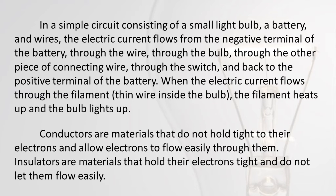Electric current flows from the negative terminal of the battery, through the wire, through the bulb, through the other piece of connecting wire, through the switch, and back to the positive terminal of the battery. When the electric current flows through the filament — the thin wire inside the bulb — the filament heats up and the bulb lights up.